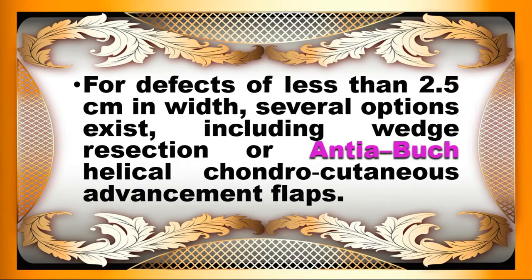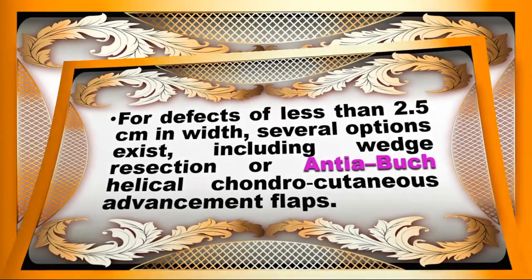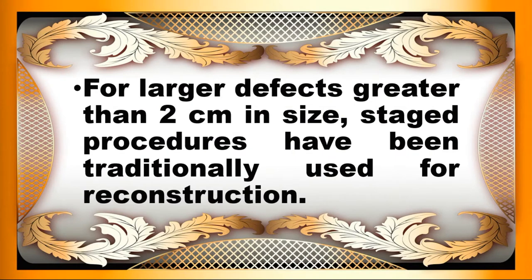For defects of less than 2.5 cm in width, several options exist, including wedge resection or anti-abusch helical chondrocutaneous advancement flaps. For larger defects greater than 2 cm in size, staged procedures have been traditionally used for reconstruction.